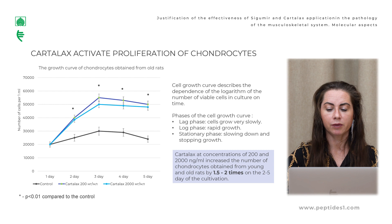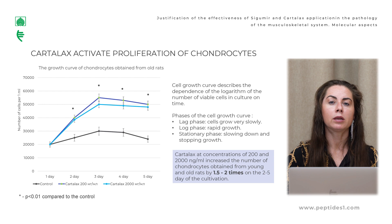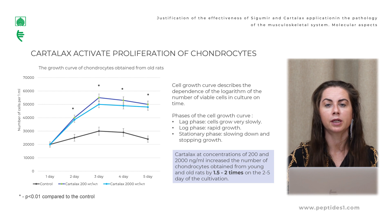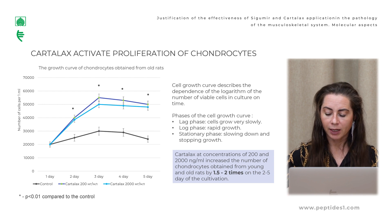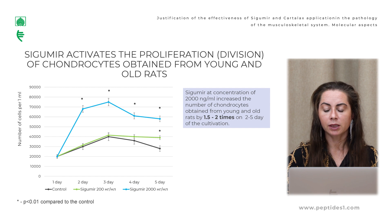The first investigation examined the cell growth curve, which describes the dependence of the logarithm of the number of viable cells in culture over time. Phases of the cell growth curve include the lag phase where cells grow very slowly, the log phase where cells grow rapidly, and the stationary phase where growth slows and stops. Cartelax at two concentrations increased the number of chondrocytes obtained from young and old rats by 1.5 to 2 times on days 2, 3, 4, and 5 of the experiment. The same effect was seen for Sigumir at the higher concentration of 2,000 nanograms per milliliter.